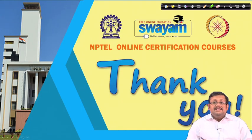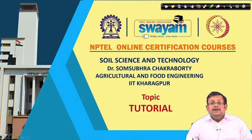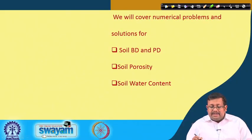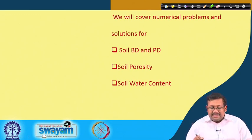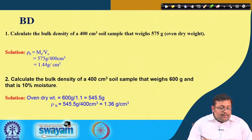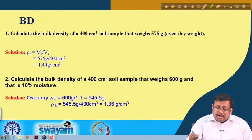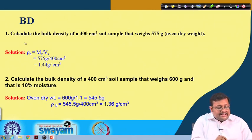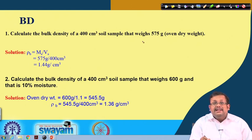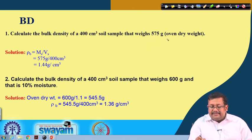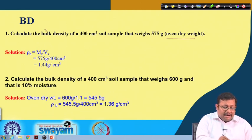We have finished the measurement of soil water content. Let us start a tutorial focusing on different mathematical problems and solutions for soil bulk density and particle density, soil porosity, and soil water content. The first question: calculate the bulk density of a 400 cubic centimeter soil sample that weighs 575 grams as oven-dry weight.